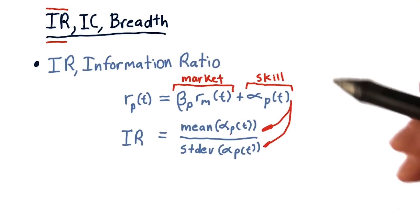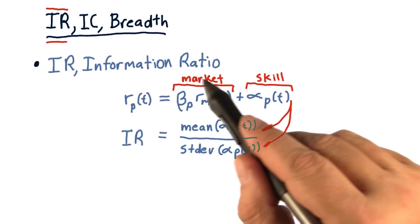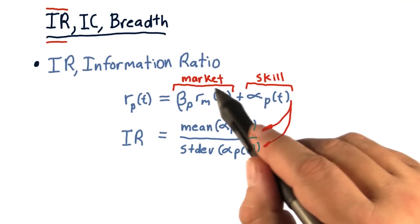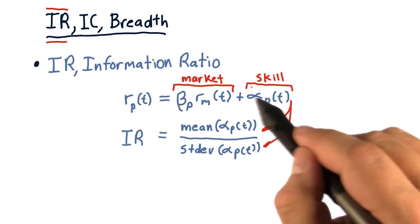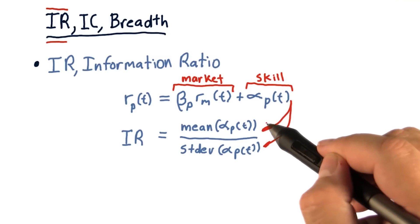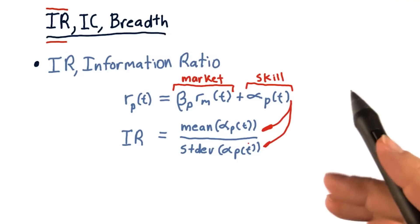You can find these by finding beta for the portfolio, calculating what the market return component was for each day, and then the difference is this residual or skill. So that's how you can compute historically the value of this information ratio.